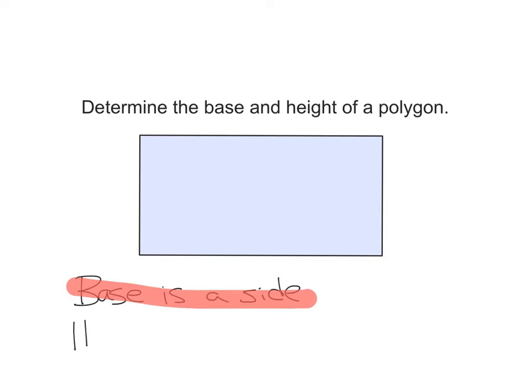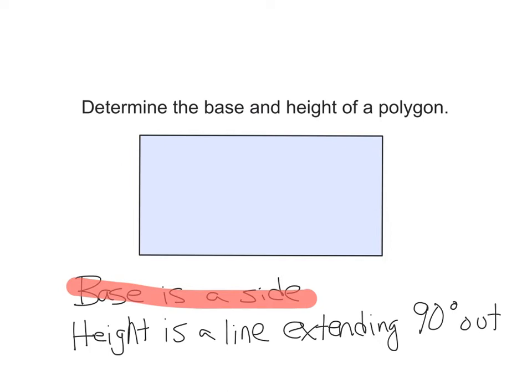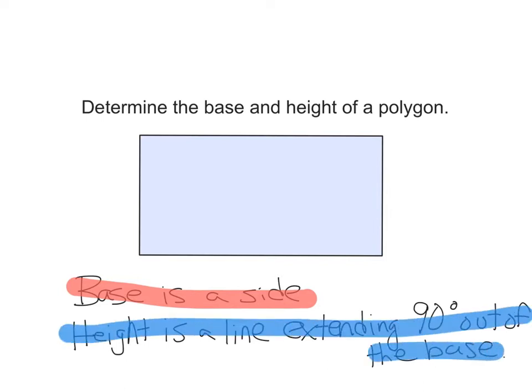The height, on the other hand, is a more complicated term. The height is a line extending 90 degrees out of the base. So we need to find a line that is extending from our base at a 90 degree angle.